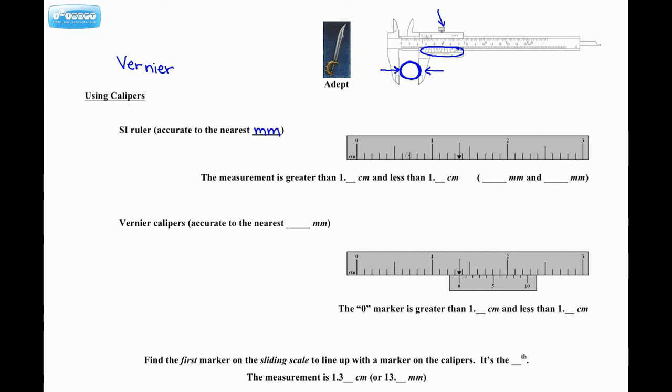So here's a ruler, but notice how the measurement that I want is not exactly on one of the millimeter markers. It's in between. So it's greater than 1.3 centimeters, because that would be 1.3 right here, but it is less than 1.4 centimeters, which is right here. I could also say that in millimeters, so it's between 13 and 14 millimeters. So we really just have to guess. Well, what these calipers will allow us to do is give us one more decimal of accuracy.